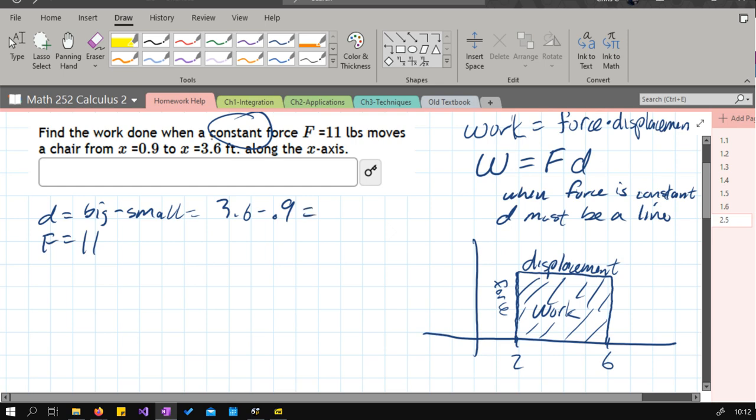Subtraction's hard. 2.7. All right. So for us, this rectangle—pretend that's a rectangle—the height is 11 and the width is 2.7. Obviously to scale. The work equals the area, so that's just the base times the height.